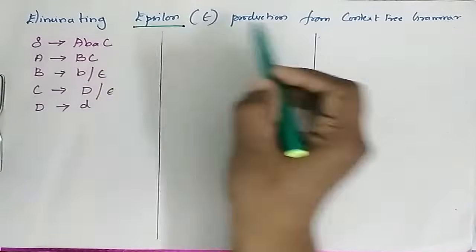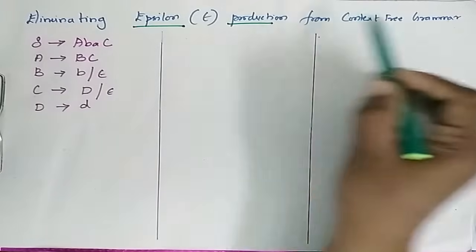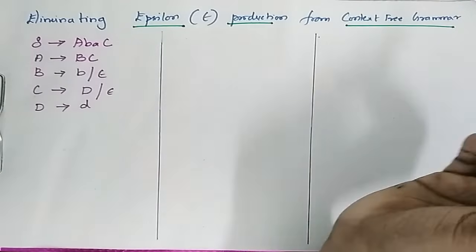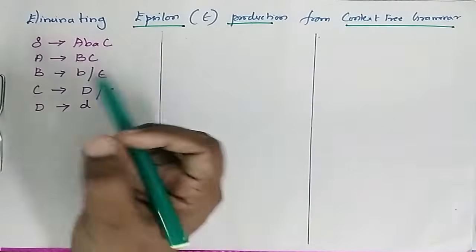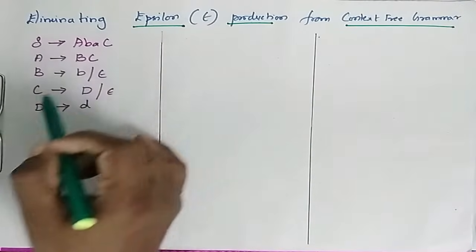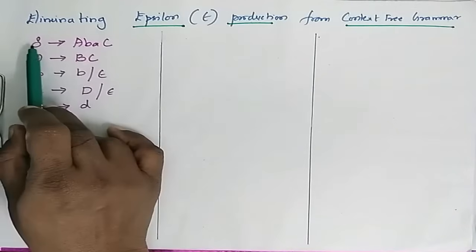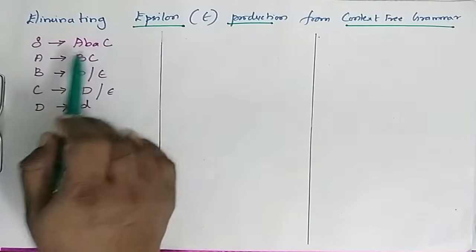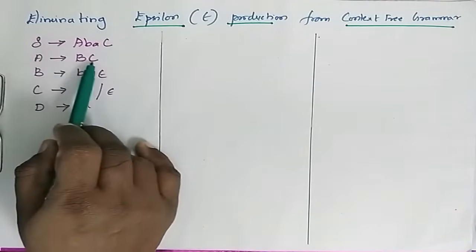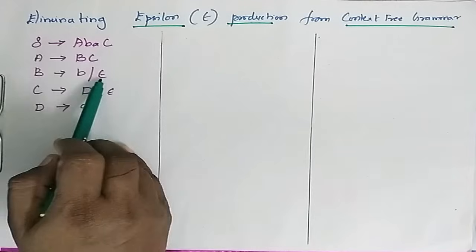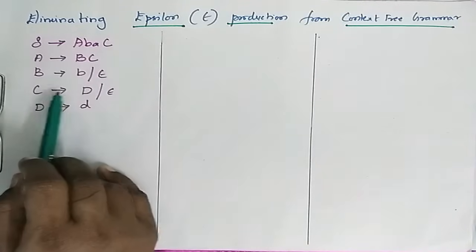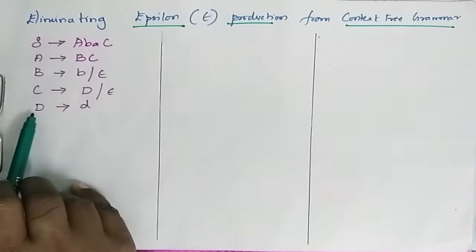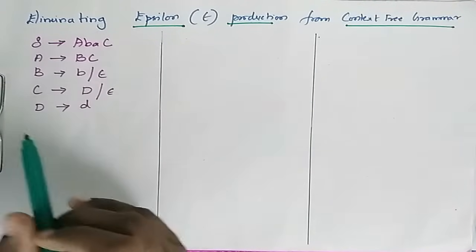Eliminating Epsilon Production from Context-Free Grammar. The production rules are given as: S → ABAC, A → BC, B → B | ε, C → D | ε, and D → D.